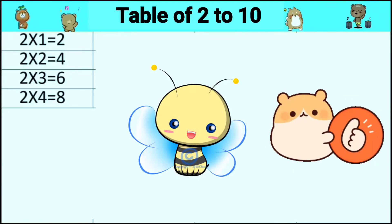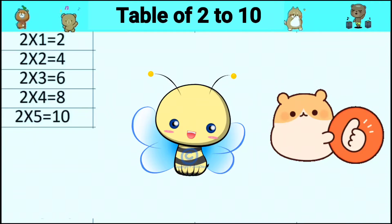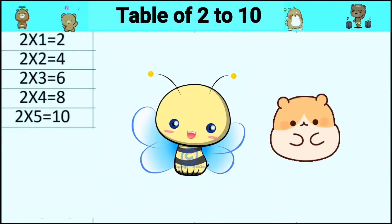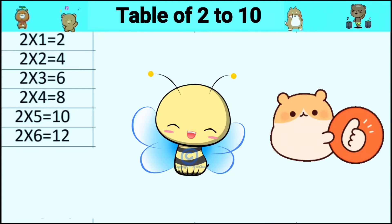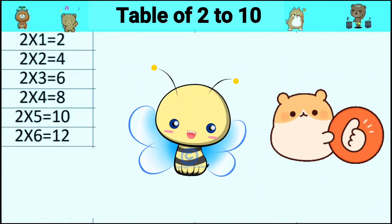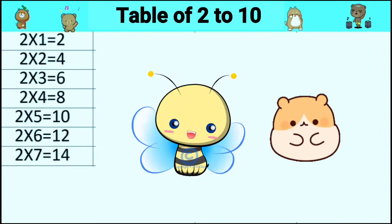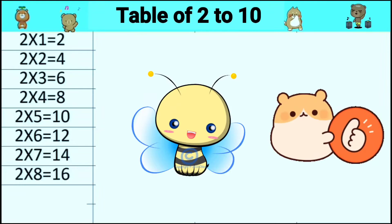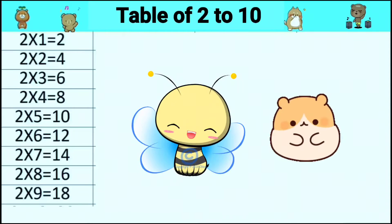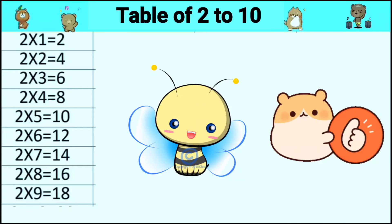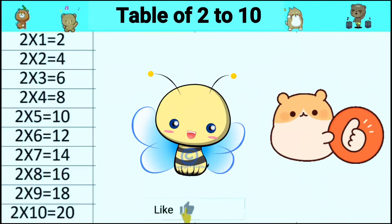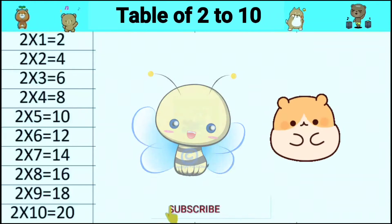2 fives are 10, 2 sixes are 12, 2 sevens are 14, 2 eights are 16, 2 nines are 18, 2 tens are 20.